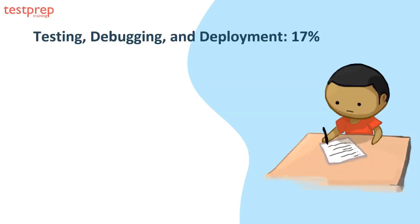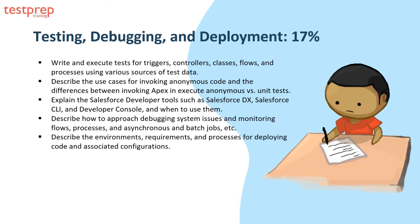Domain 5 is Testing, Debugging, and Deployment, which comprises 17% weightage in the exam. This covers five areas: write and execute tests for triggers, controllers, classes, flows, and processes using various sources of test data; describe the use cases for invoking anonymous code and the differences between invoking Apex execute anonymous versus unit tests; explain Salesforce developer tools such as Salesforce DX, Salesforce CLI, and Developer Console and when to use them; describe how to approach debugging system issues and monitoring flows, processes, and asynchronous and batch jobs; and describe the environments, requirements, and processes for deploying code and associated configurations.